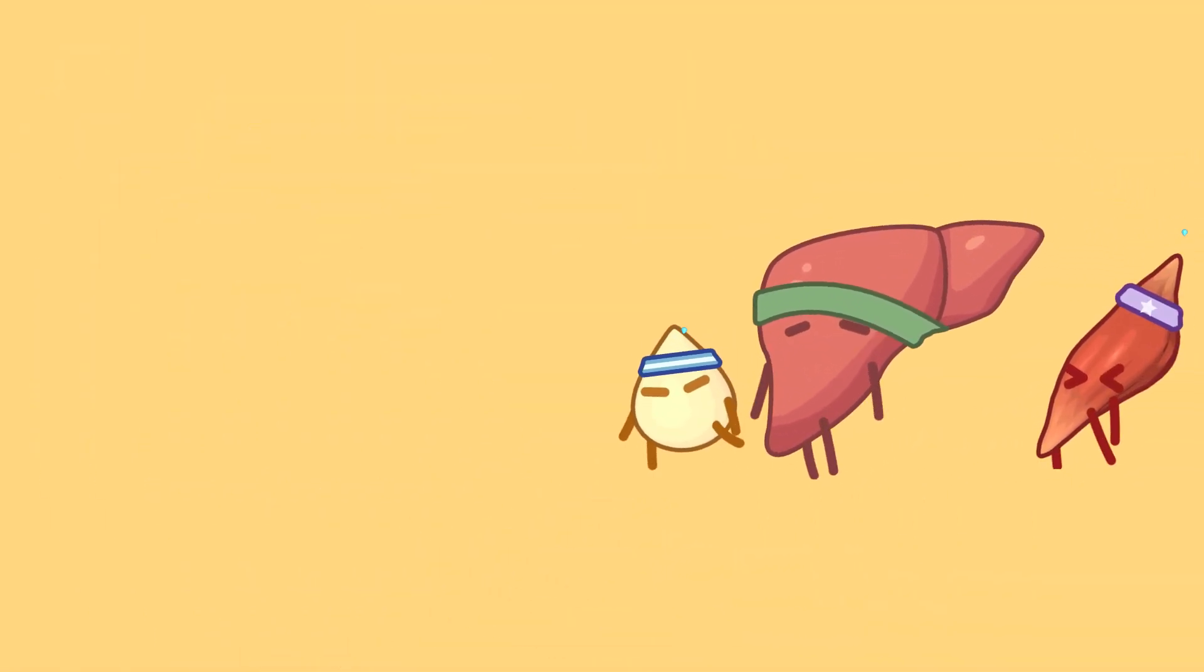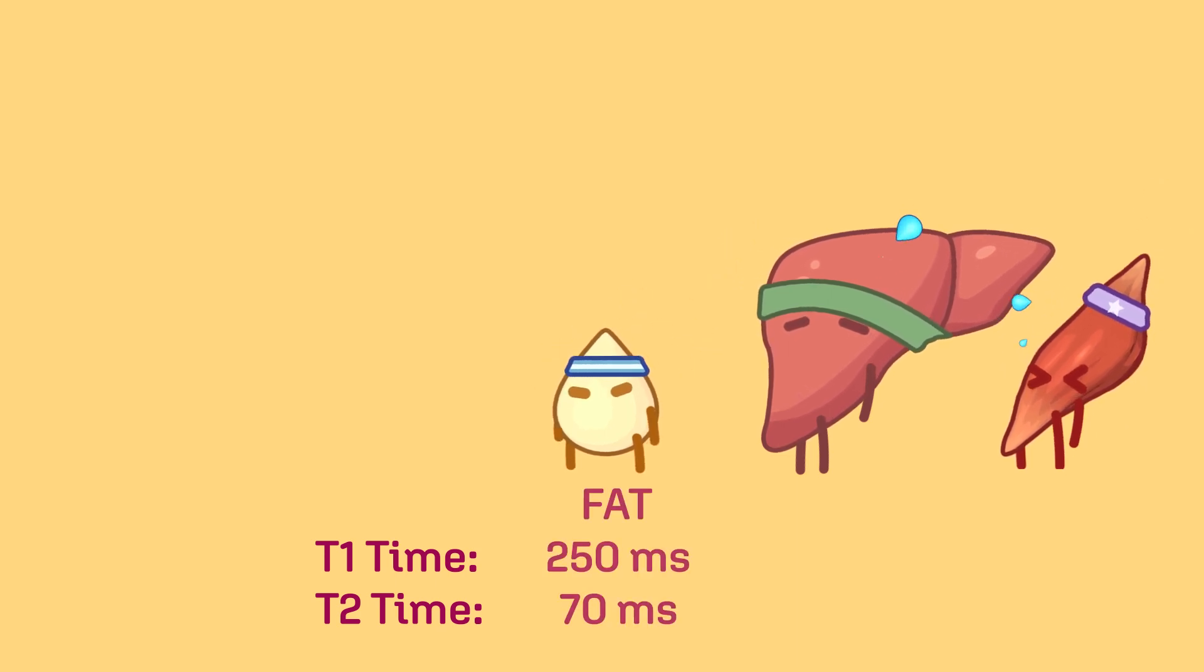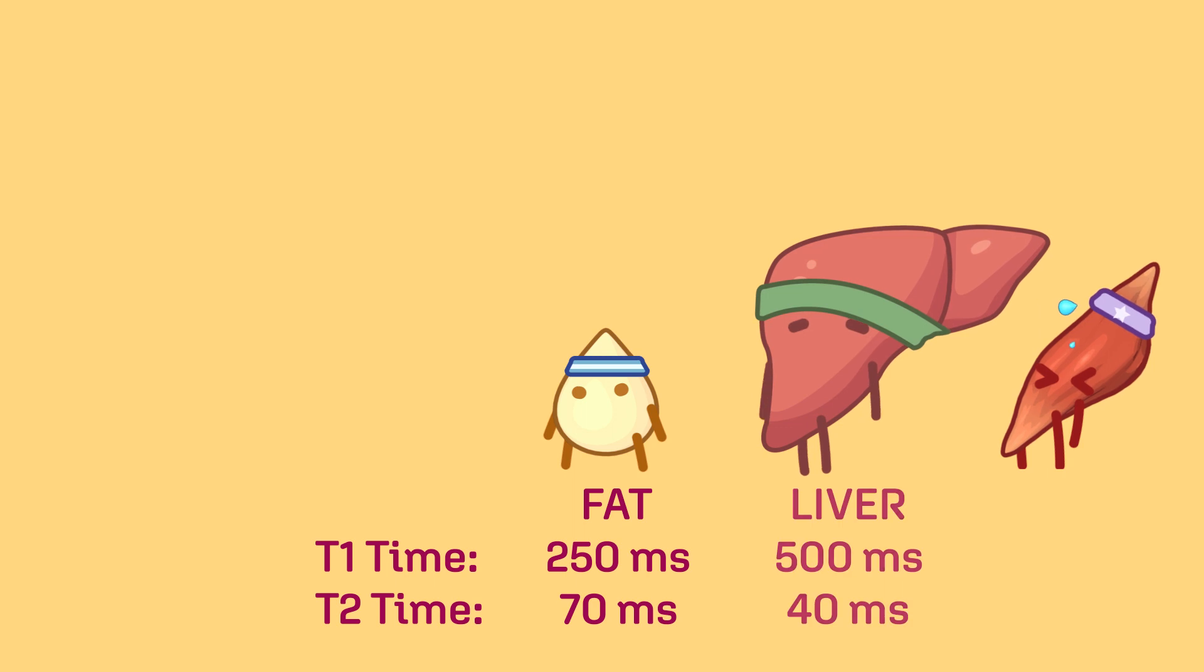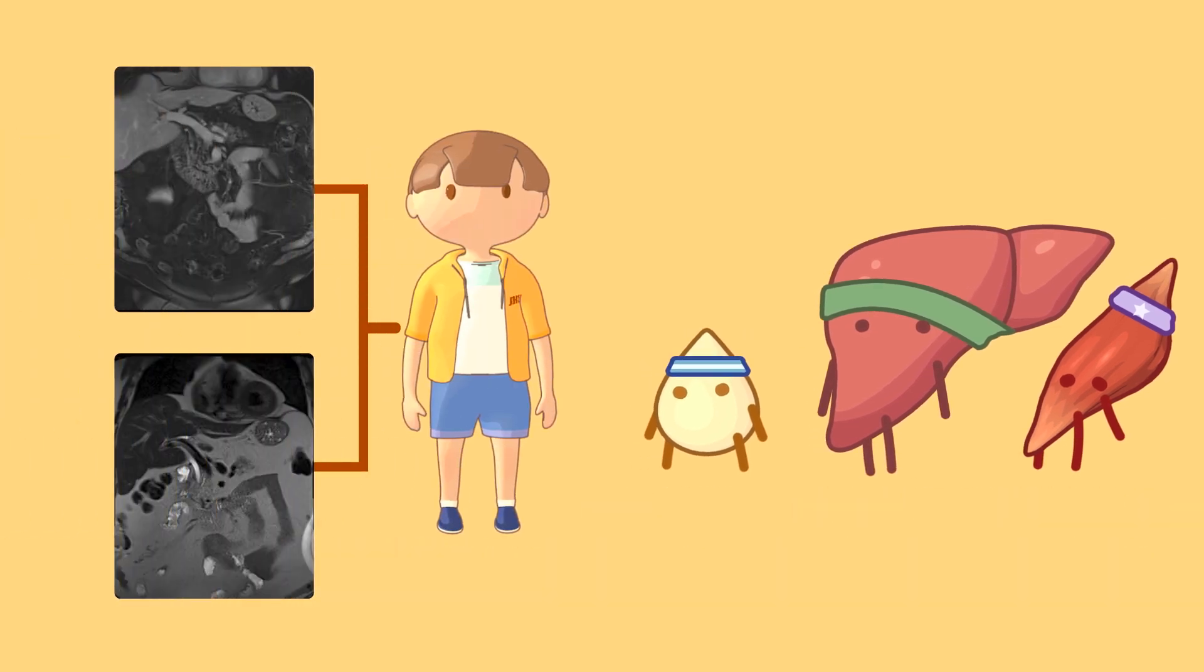The T1 and T2 time is unique to each tissue type image. Think about a class of children running a foot race. Each will recover to their baseline heart rate at a slightly different time depending on their physical fitness.